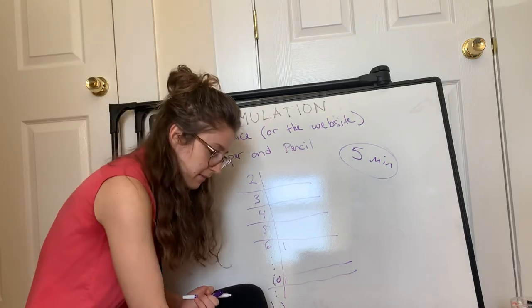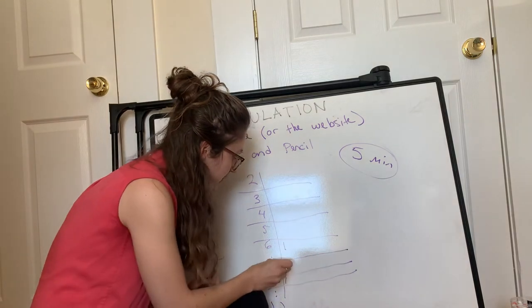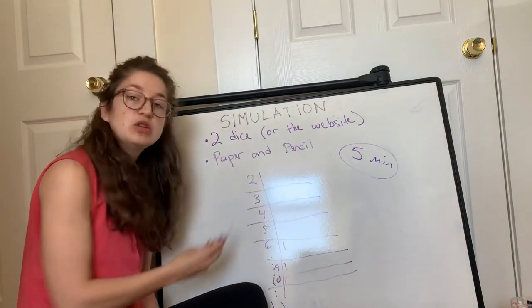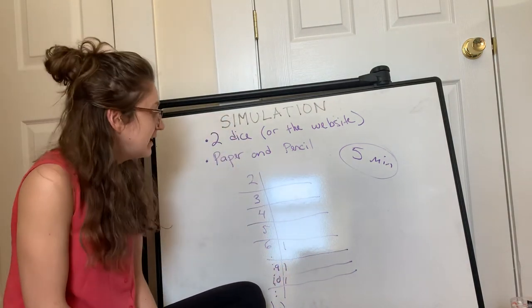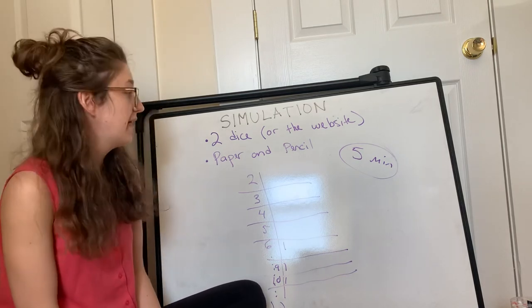I roll again. I get a five and a four, which is nine. So I put a tally mark next to the nine. Just do that for five minutes. When I did it, I managed to roll my dice eighty times. Yours might be more or less than that.